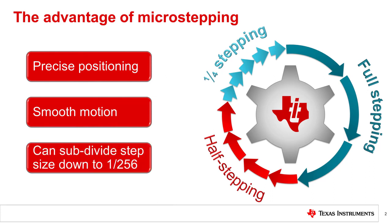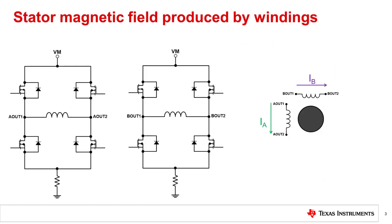Some integrated stepper drivers can create microsteps that are a factor of 256 smaller than the full step size. Current regulation is an important part of how stepper drivers implement microstepping.